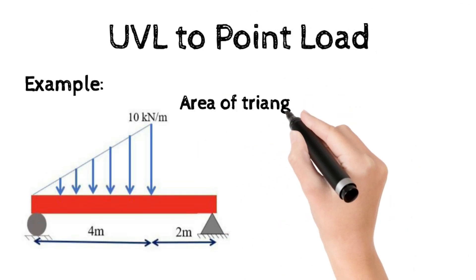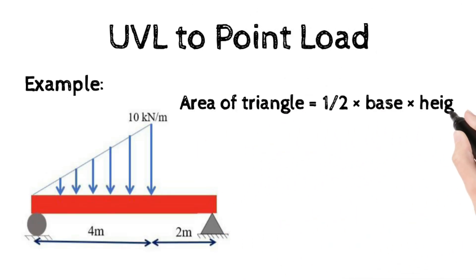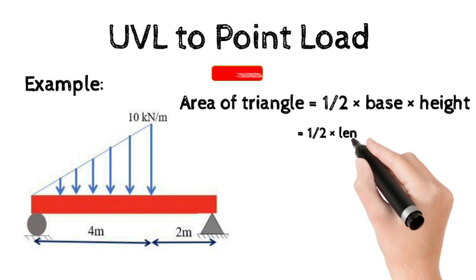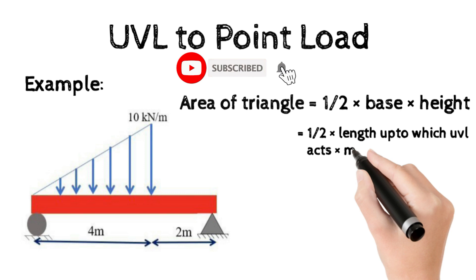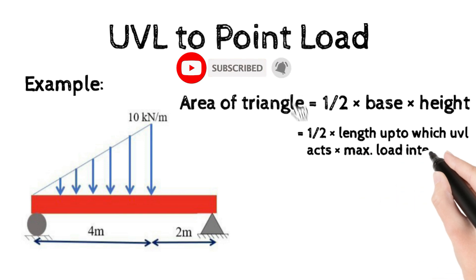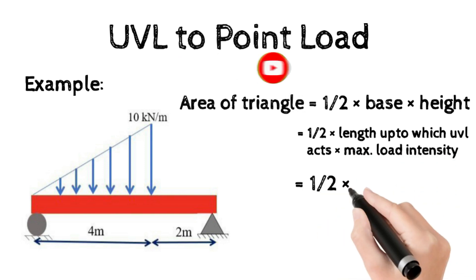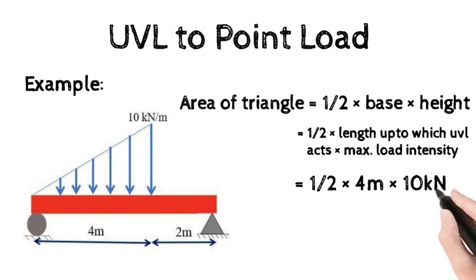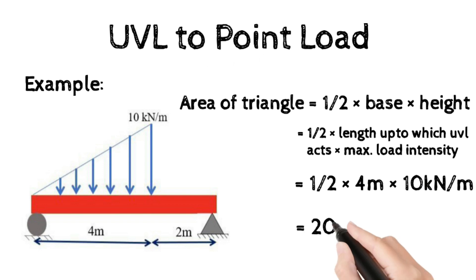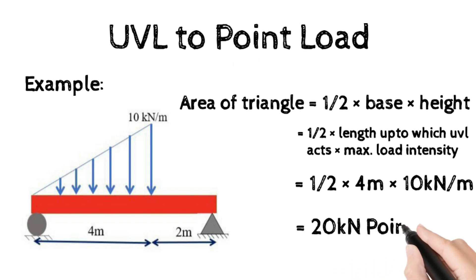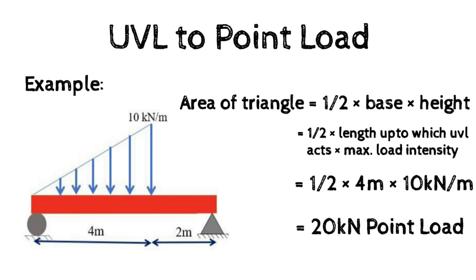The area of a triangle equals half times base times height. Here, the base is the length or span over which the load acts, and the height is the maximum load intensity — that is, the peak load intensity. Substituting these values, we get 20 kilonewton as the equivalent point load for the 10 kilonewton per meter UVL.